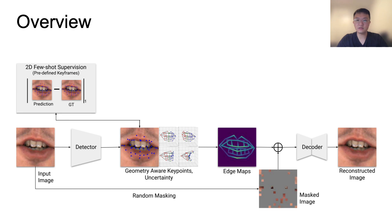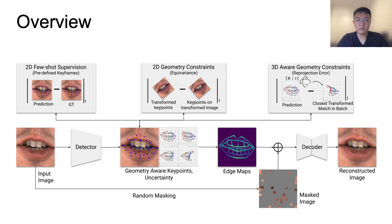During this process, we supervise the annotated examples in 2D. We apply 2D geometry constraints to enforce keypoints to follow the same 2D transformation applied to the image. We apply 3D geometry constraints, enforcing 3D similarity between keypoints in a batch.